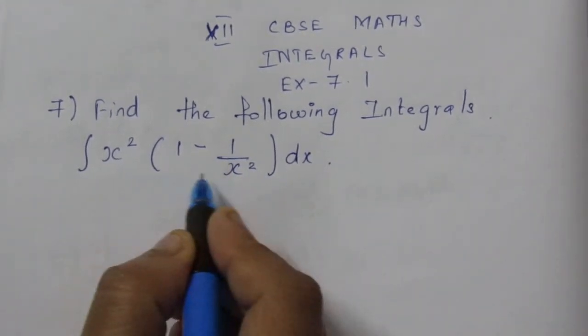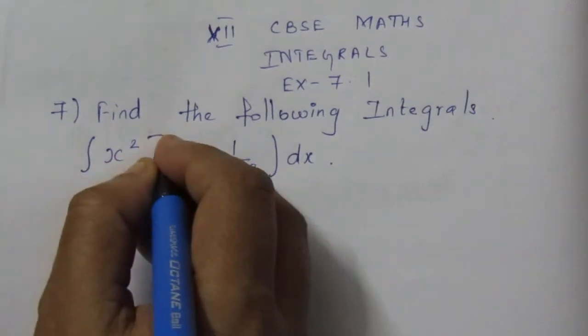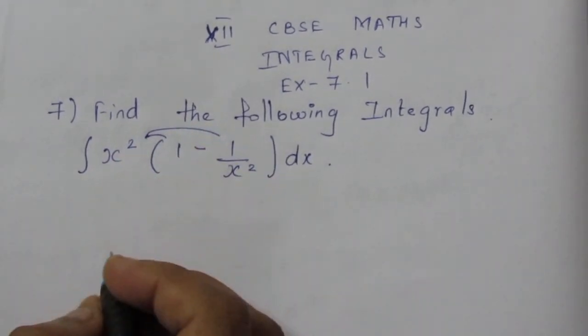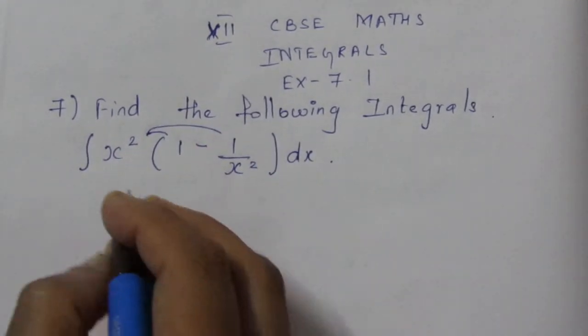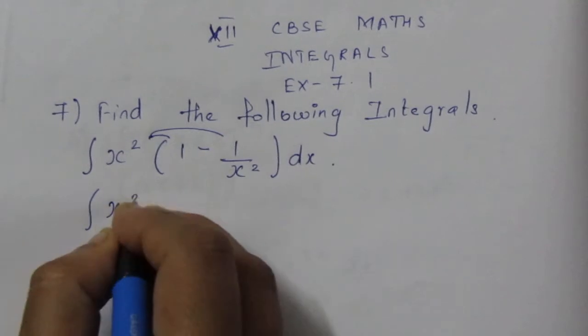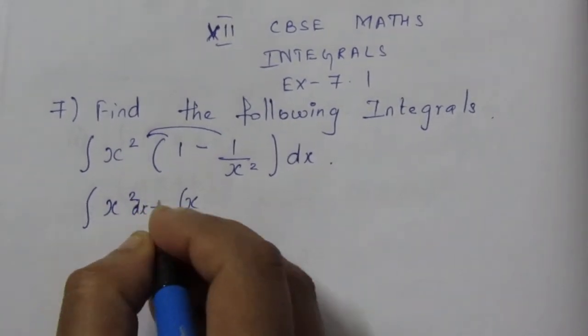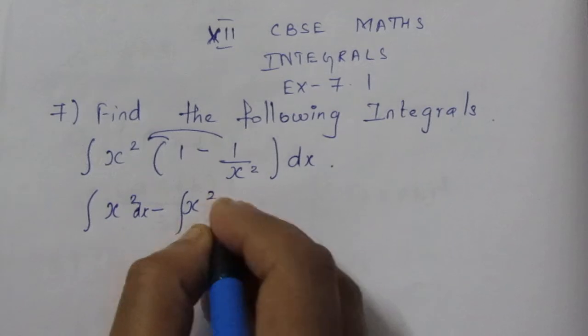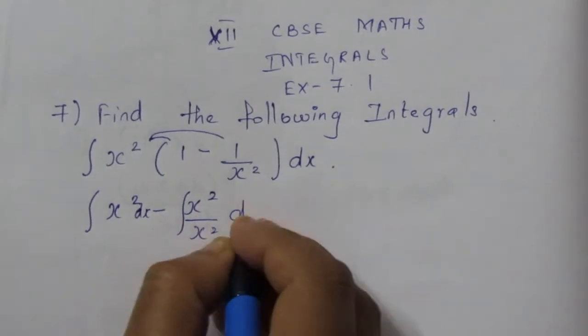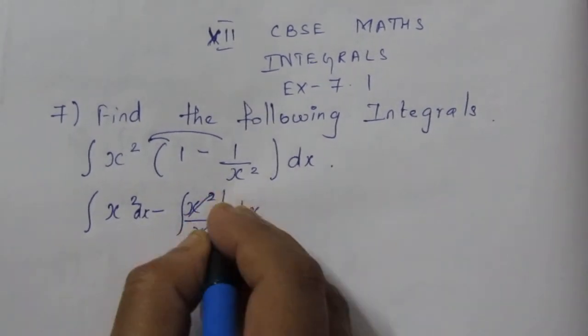Here it is in multiplication, so we do not have any specific rule. Just multiply the x² inside to make it very easy. If I multiply, it becomes x² minus x²/x². This x² by x² gets cancelled and becomes 1.